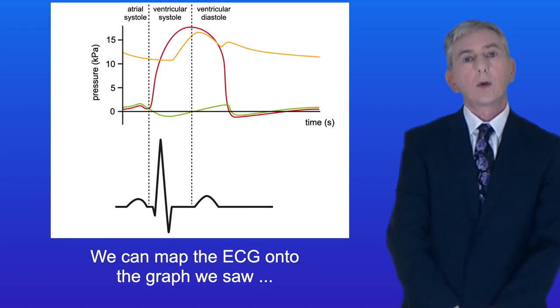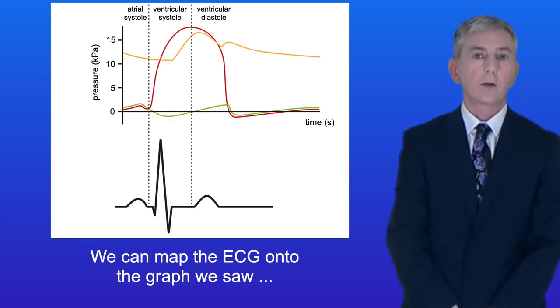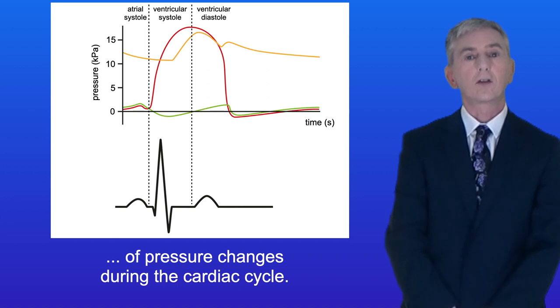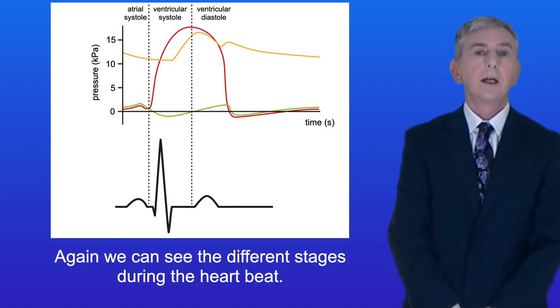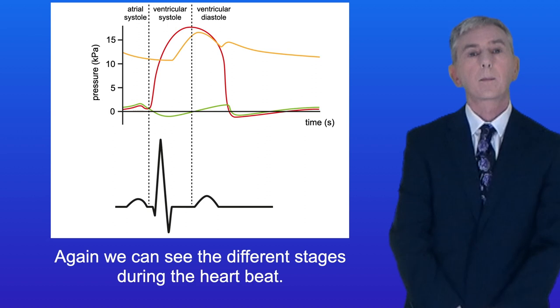Now we can map the ECG onto the graph we saw of pressure changes during the cardiac cycle, and again we can see the different stages during the heartbeat.